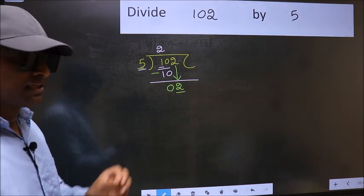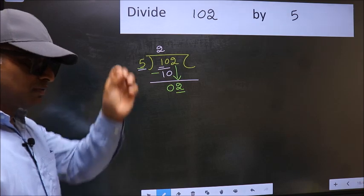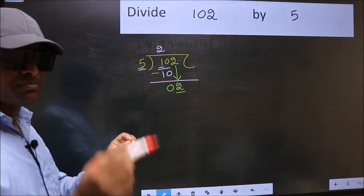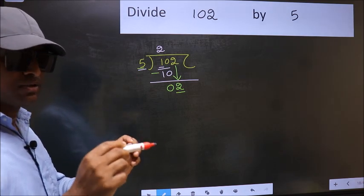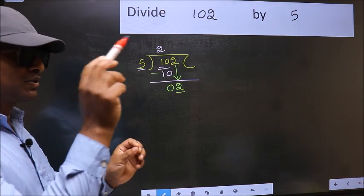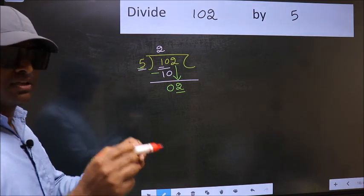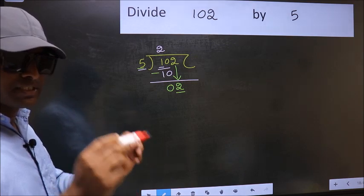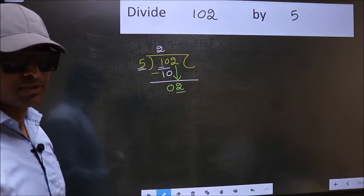I repeat. Bringing the number down and also putting dot and taking 0, both in the same step - you are not supposed to do this.